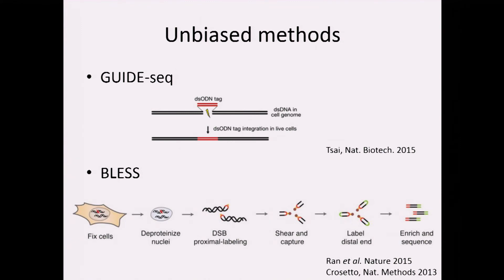BLESS is the other option we commonly use in our lab — Biotin Labeled Enrichment and Sequencing. The way it works: you transfect your Cas9 into cells, fix all the cells, deproteinize them and isolate the nuclei. Then you permeabilize the nuclei and flow in small adapters shown in orange, which have a biotin label on them. These adapters attach onto all the double-strand breaks in the cell. Then you shear up your DNA, add another label, enrich and sequence, and you're able to pull out peaks of where all the double-strand breaks are. This gives you a very nice unbiased profile of all the double-strand breaks in the cell.